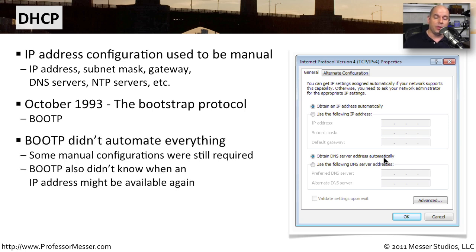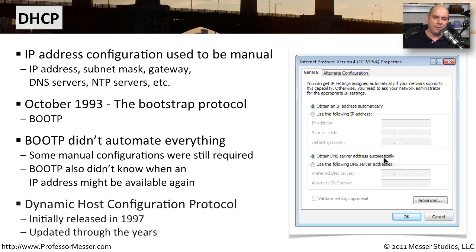But Boot P didn't do everything. Although it configured quite a bit automatically, there were still some sections that had to be manually configured. Boot P also had no built-in mechanism to know when an IP address would become available again — it could hand them out but couldn't take them back. This meant large address pools were needed, making it inefficient. So in 1997, we came up with an updated version called DHCP — Dynamic Host Configuration Protocol — which gave much more flexibility and could determine when an IP address lease had expired and return it to the pool.